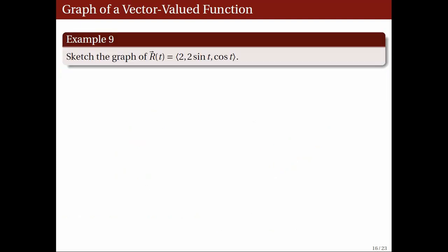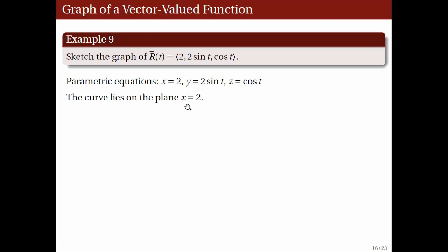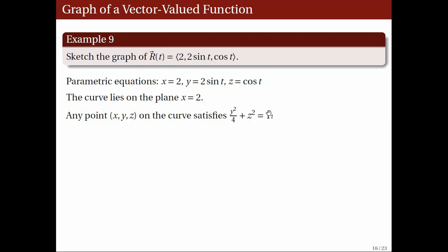Next, consider the vector function r with components 2, 2 sin t, and cos t. These are the parametric equations. Since the first component is constant, the curve lies on the plane x = 2. From the parametric equations, y/2 = sin t, so any point satisfies (y/2)² + z² = 1. This defines an ellipse, so we get a copy of the ellipse y²/4 + z² = 1 on the plane x = 2, which is parallel to the yz-plane.